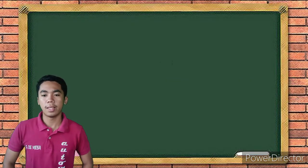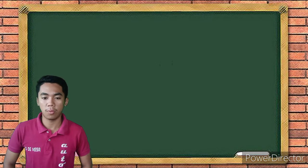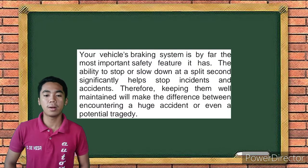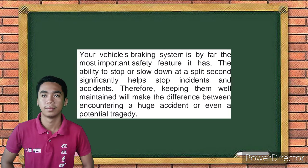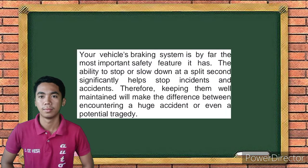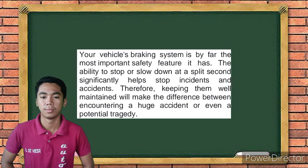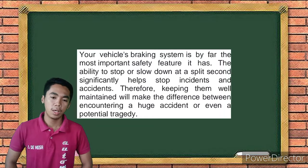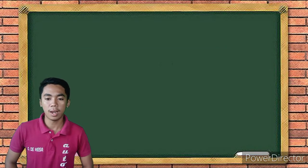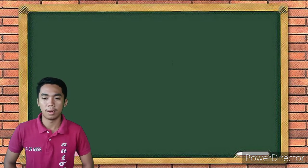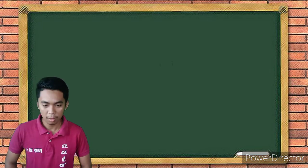Now I will discuss the importance of having a brake system and its purpose. Your vehicle's braking system is by far the most important safety feature it has. The ability to stop or slow down in a split second significantly helps stop incidents and accidents. Therefore, keeping them well maintained will make the difference. Having a brake system will help us reduce accidents and provide safety. The friction of your tires against the road is what slows down and stops your car, and the brakes are what's responsible for stopping the wheels from spinning.